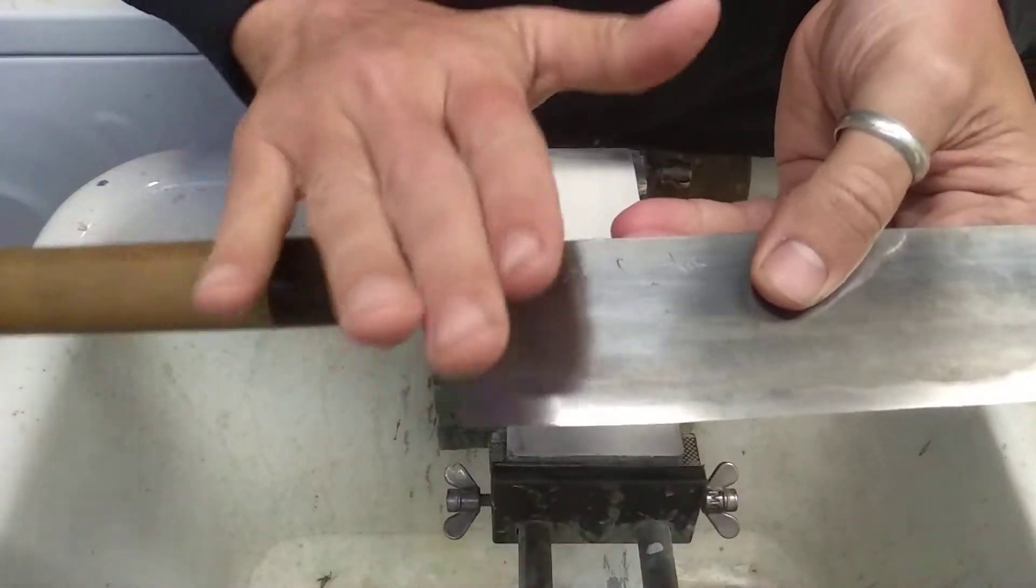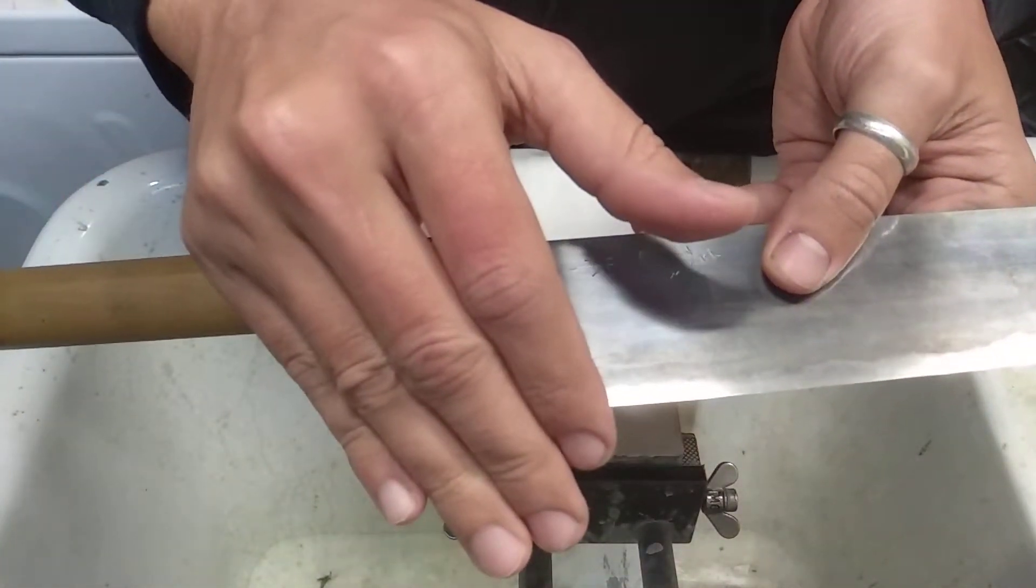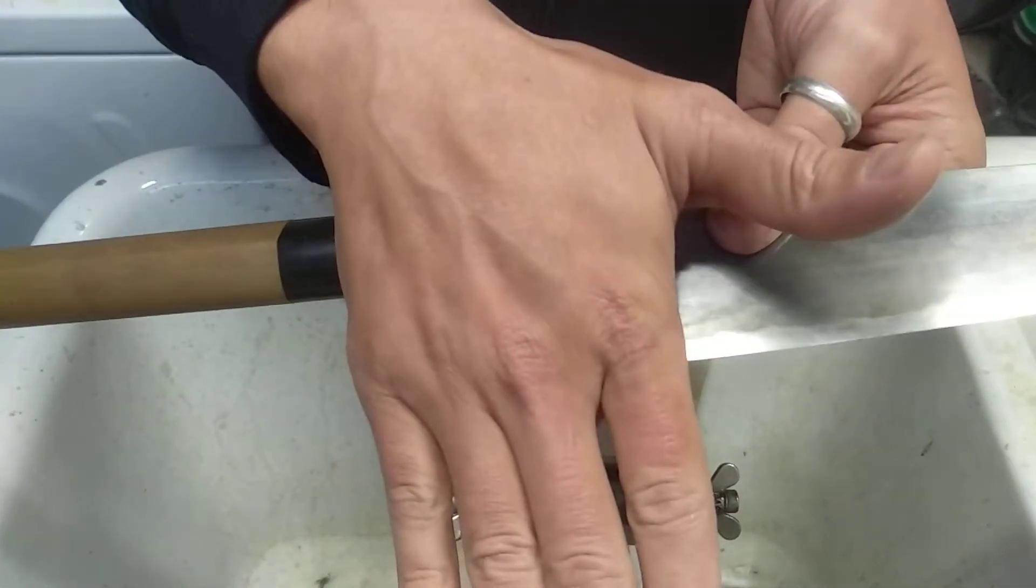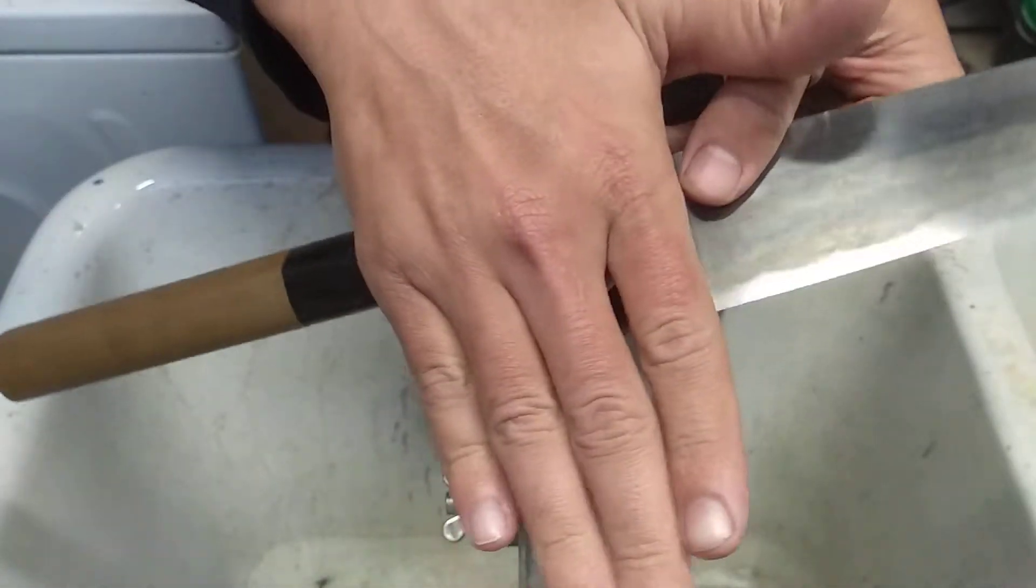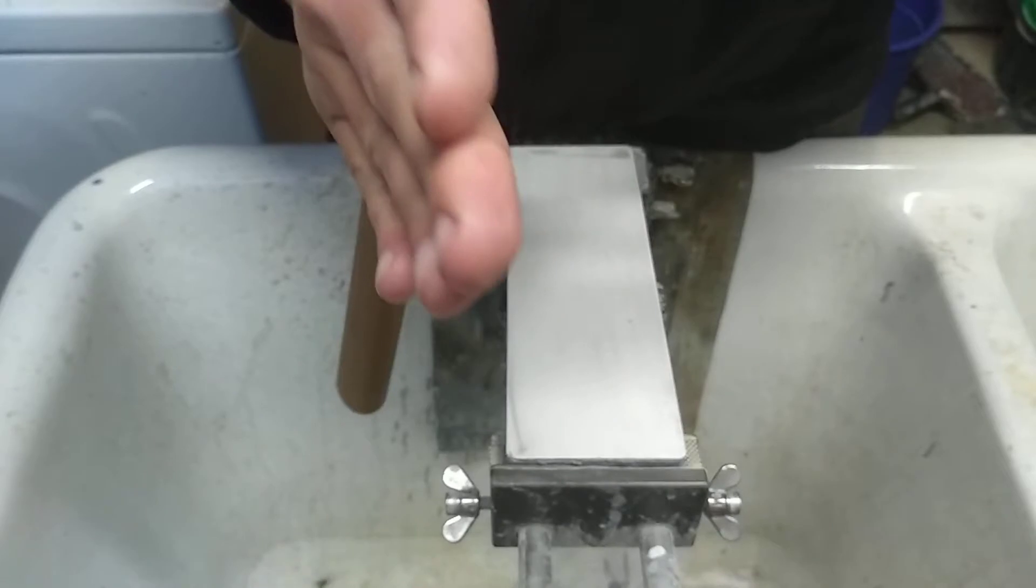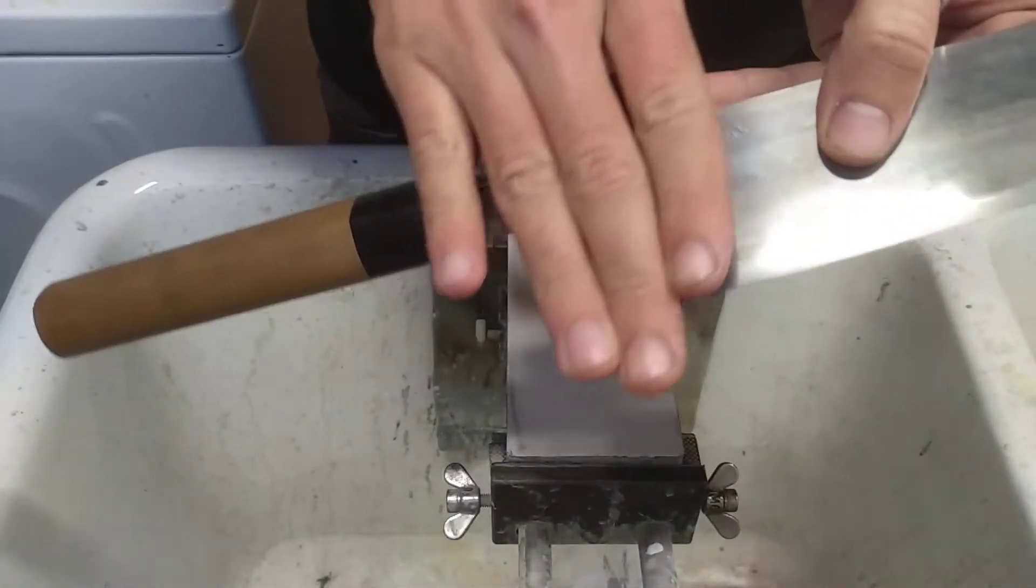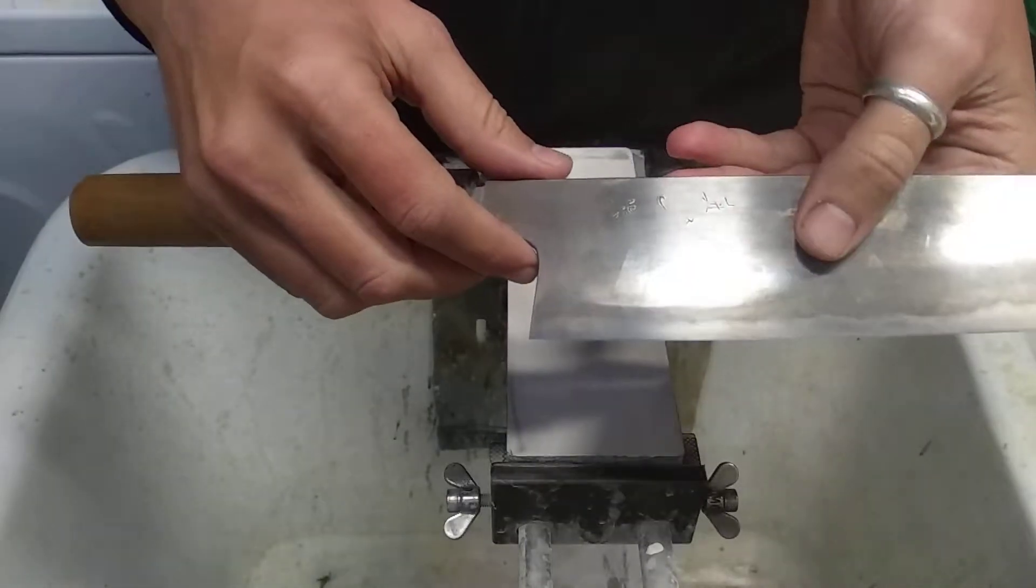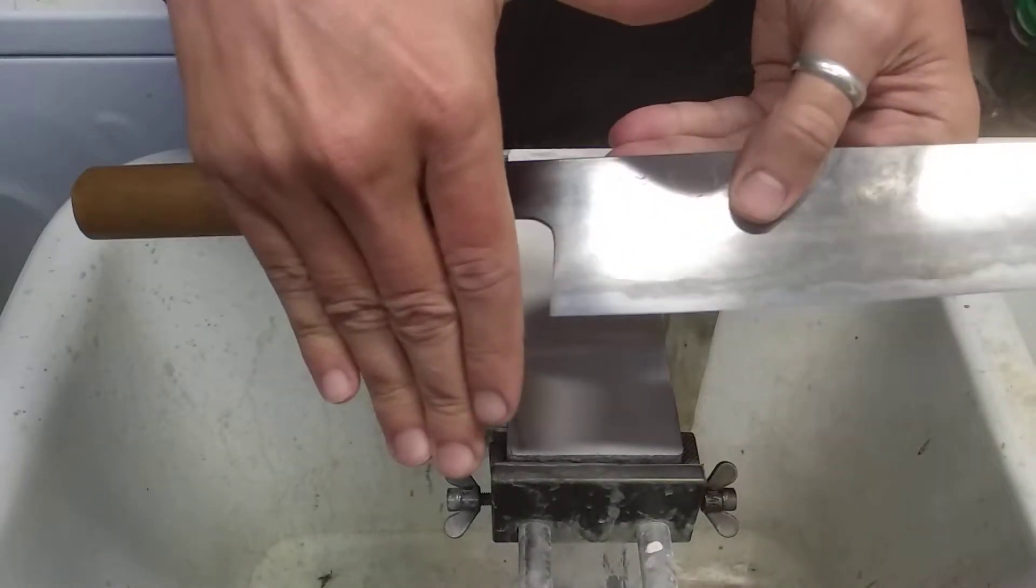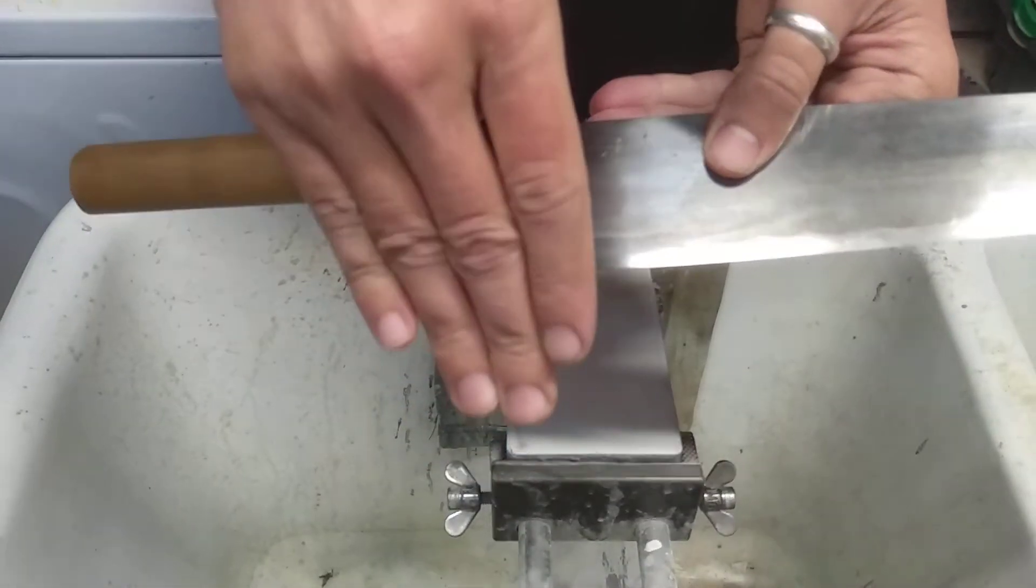Now, the problem is that convexity there, you deleted it by doing a full face shallow angle. So it's very shallow. And now you don't have that steel anymore.